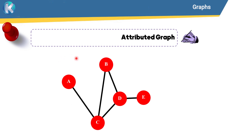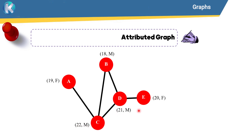Suppose that these five people are in a small social network. This node has some attributes — she's female and she's 19 years old. So the first feature is age and the second one is gender. Node B is 18 and male, node C is 22 and male, node D is 21 and male, and node E is 20 and female. The edges show the strength of the relationship.